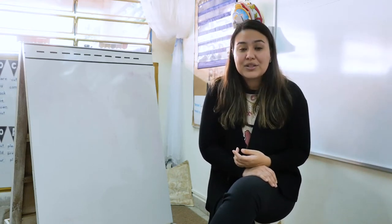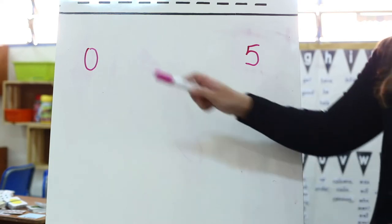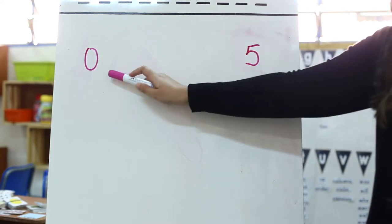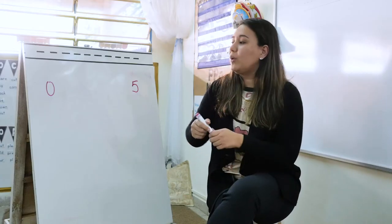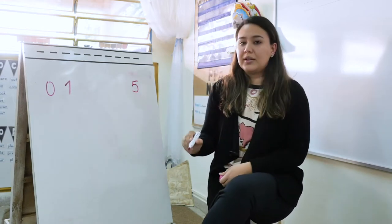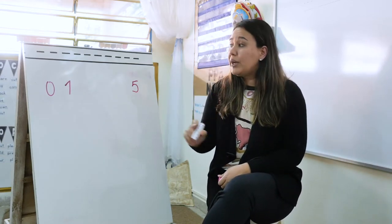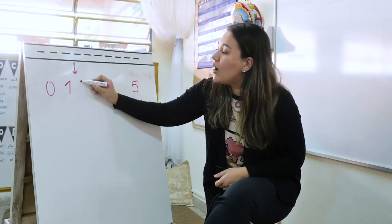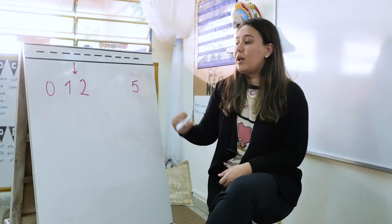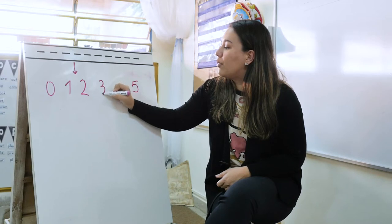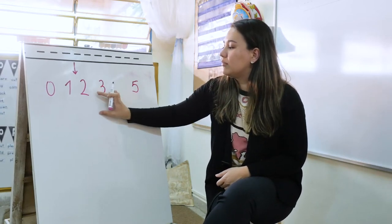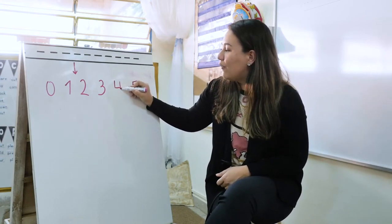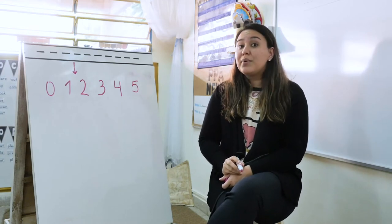Do you remember that last class we were talking about numbers? We were counting from number zero all the way to number five. Zero represents nothing at all, and then we went with number one — remember we write from top to bottom. Then after number one comes number two, after number two comes number three.